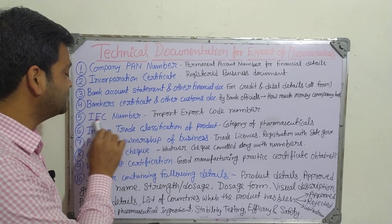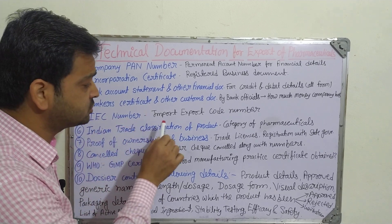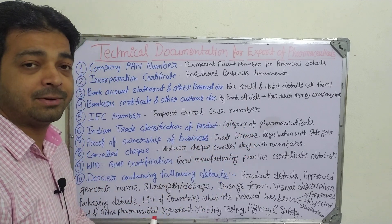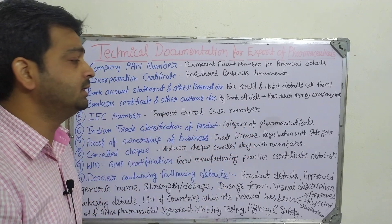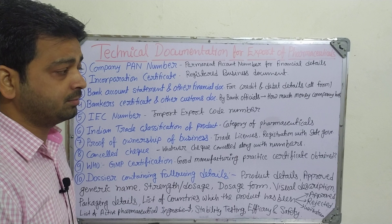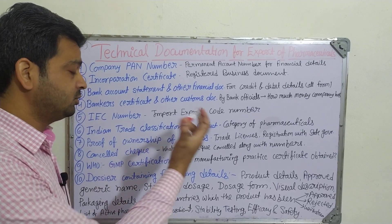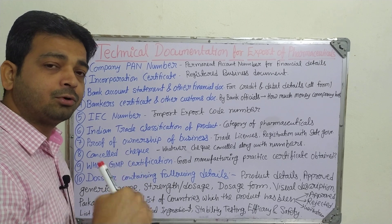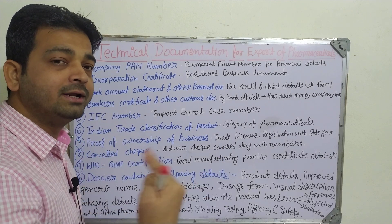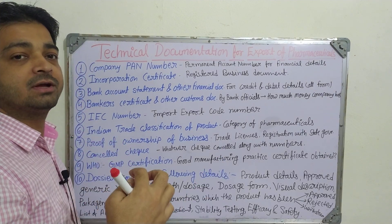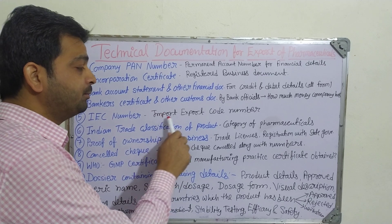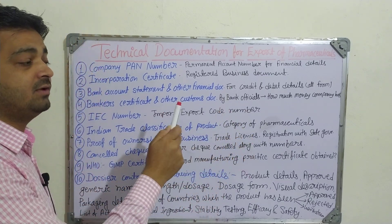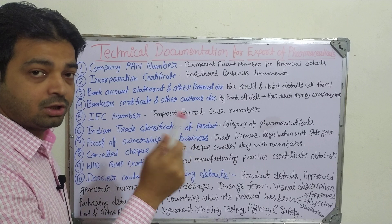The fifth one is the IEC number — Import Export Code number, which we discussed in the last class. This code number is issued by the authorizing body, and with that code the particular product can be exported or imported by the particular manufacturer or company. It is very important especially when exporting or importing any pharmaceutical or goods.